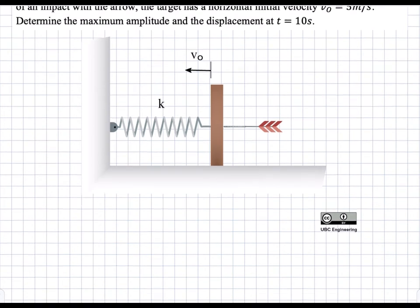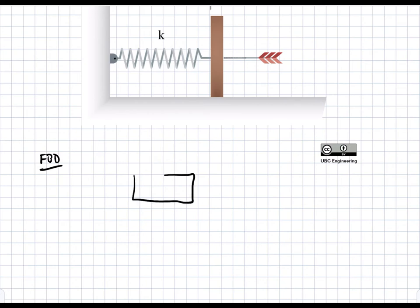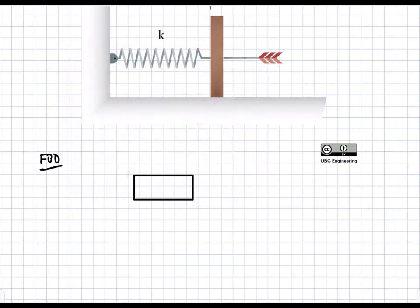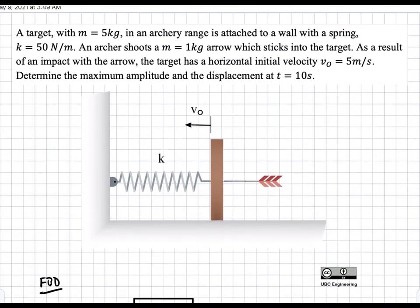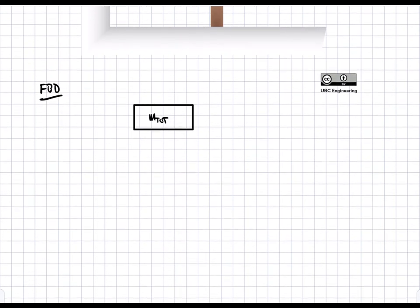The first thing we need to do is draw a free body diagram and determine all of the forces acting on this mass. I'm going to draw the mass as a rectangle, and this is going to include both the mass of the plate and also the mass of the arrow. This is going to be m_total. Both masses are added because the question specifically states that the arrow sticks to the target.